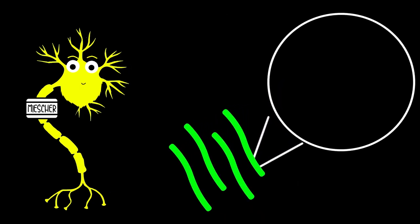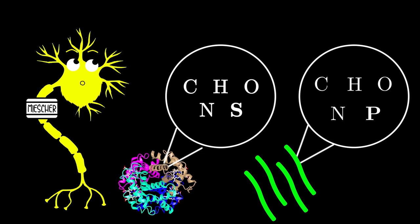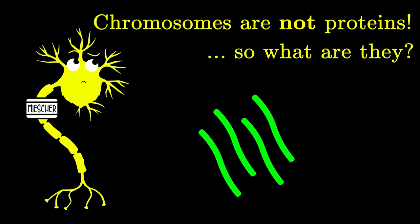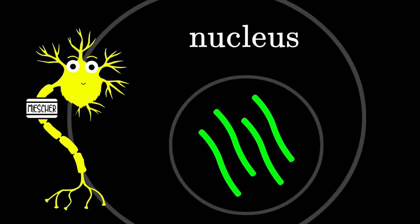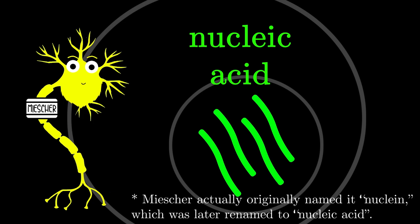And using the sample, Miescher did an elemental analysis. And he found that chromosomes contain carbon, hydrogen, oxygen, nitrogen, and phosphorus. And it was a lot of phosphorus. Remember, phosphorus isn't found in proteins. So Miescher realized that these chromosomes couldn't be proteins. It seemed like these chromosomes were made of a substance that hadn't even been discovered before. So naturally, Miescher went, let's give this substance a name. So Miescher uncreatively thought, this substance is in the nucleus. So let's call it nucleic acid.